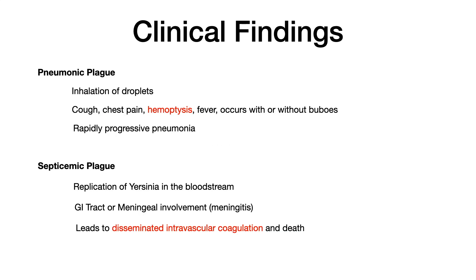Pneumonic and septicemic plague are lower yield but worth knowing. Bubonic is the highest yield version that tends to show up most often on USMLE and COMLEX. Pneumonic plague is due to the inhalation of droplets. This leads to cough, chest pain, hemoptysis, and fever, and can be plus or minus buboes. The key symptoms are hemoptysis and rapidly progressive pneumonia.